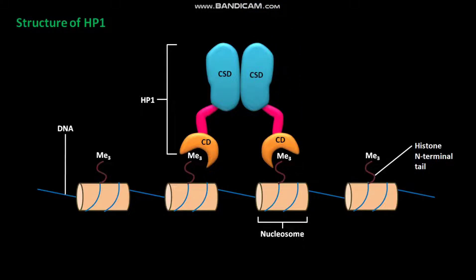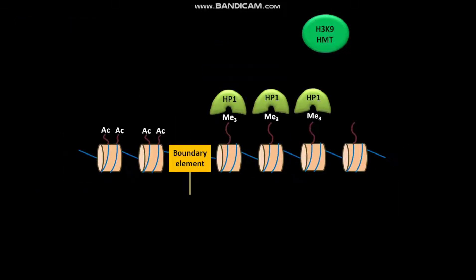Due to this binding by CDs and CSDs, the chromatin containing histone H3 trimethylated at lysine-9 is assembled into a condensed chromatin structure.